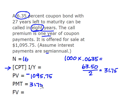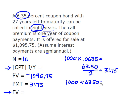This is where yield to call differs from other bond questions. Normally you just put $1,000 for your future value, but in this case bondholders will receive the par value plus that one year of coupon payments as a call premium. So we add that year of coupon payments to come up with a future value of $1,063.50.